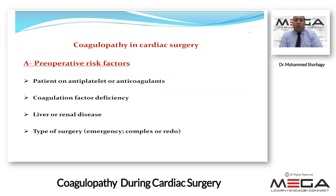What are the causes of coagulopathy in cardiac surgery? We have four causes. The first is general preoperative risk factors — patients on antiplatelets or anticoagulants, coagulation factor deficiency, liver or renal disease. Liver disease may cause coagulation factor deficiency or dysfunction; renal disease may cause thrombasthenia. The type of surgery is important: emergency surgery has no time to stop antiplatelets or anticoagulants. Complex surgery with prolonged cardiopulmonary bypass time triggers coagulopathy.